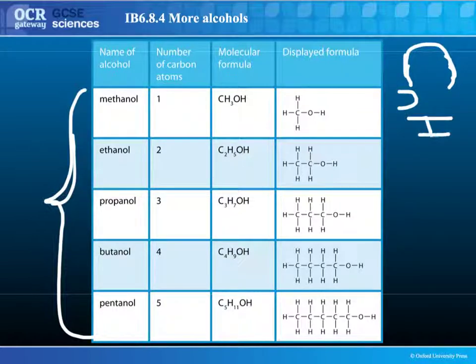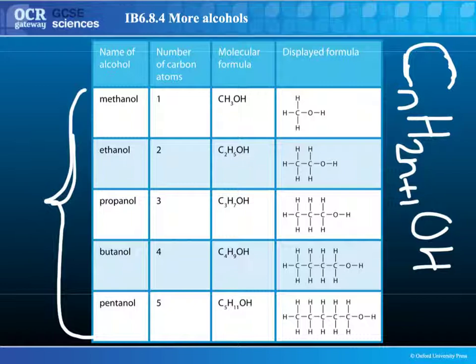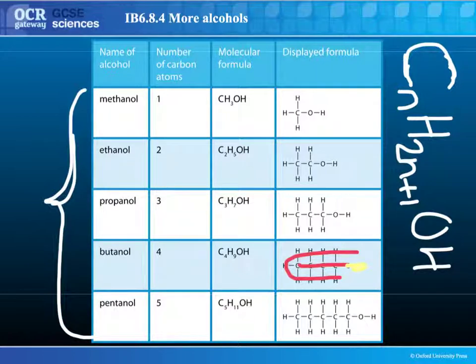The general formula for an alcohol is: the number of carbons gives you the number of hydrogens, as long as you multiply it by two and add one, and it also has an OH group. That's essentially the same as an alkane, with one of the hydrogens replaced by an OH group — a chain of carbons saturated with hydrogens, except for the one OH group at one end.